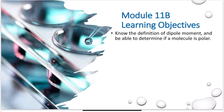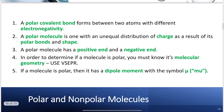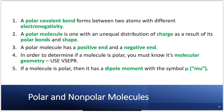Let's delve into this a bit more and see how we identify if a molecule is polar. A polar covalent bond forms between two atoms with different electronegativity. An electronegativity difference of zero means purely covalent. Between zero and 0.4, we say non-polar. Greater than 0.4 up to 1.9, polar covalent. Greater than 1.9 — so 2.0 and higher — we say ionic.